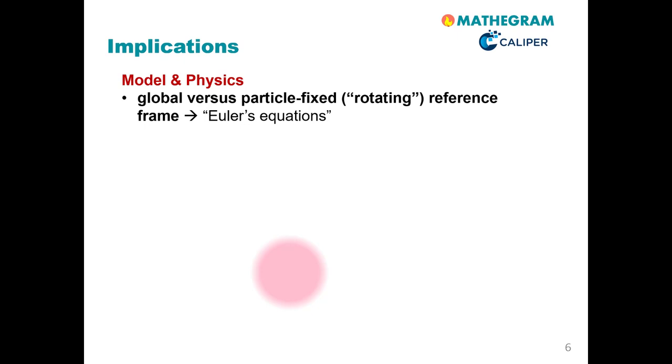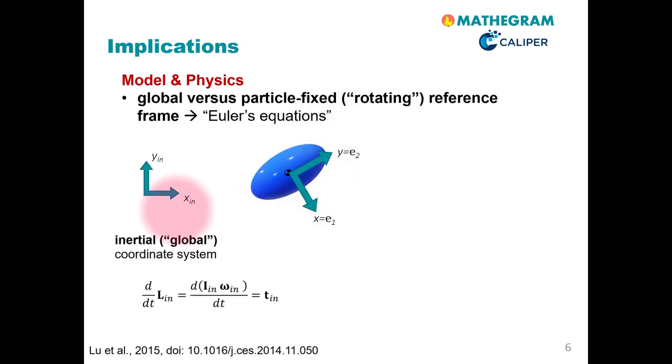Let us now have a look at the implications of this global versus particle fixed rotating reference frame. This leads us to the so-called Euler equations that we will discuss later one more time. However, let us look at the equations that we have written down in the very early part of the MOOC.